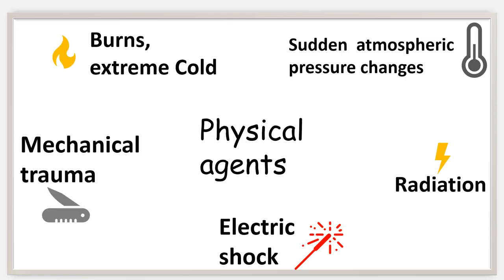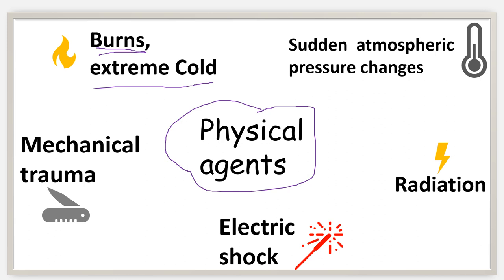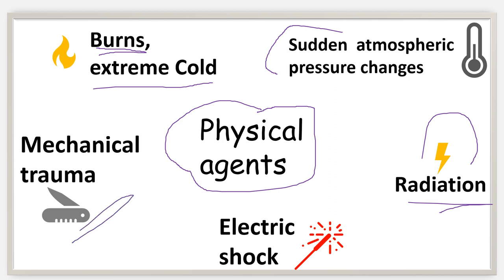The next cause of cell injury is physical agents. These include extreme heat like burns, extreme cold like frostbite, sudden atmospheric pressure changes, X-rays and gamma rays causing injury due to radiation, electric shock by home appliances, and mechanical trauma by sharp instruments at home, in the workplace, or while travelling.